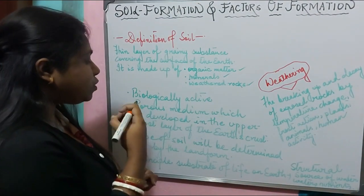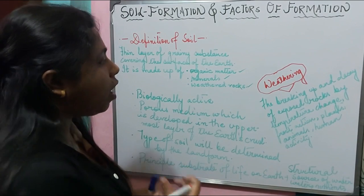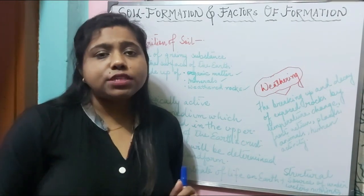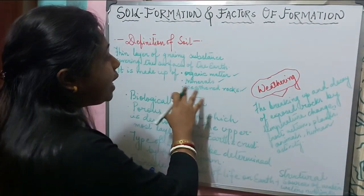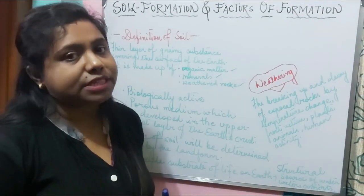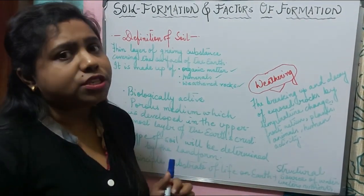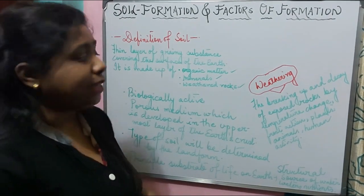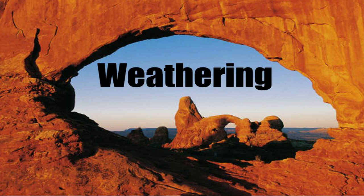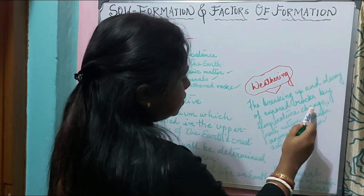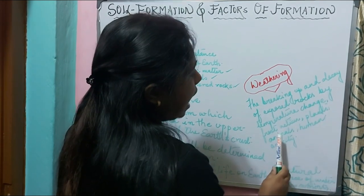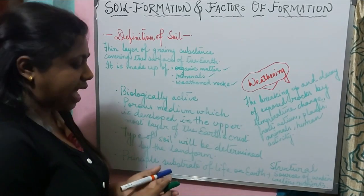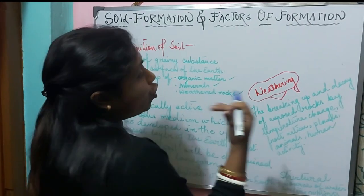We can utilize the plants for our own needs. Soil is referred to as a principal substrata of life on earth. When will a soil be fertile? When it has the right mixture of minerals and organic matter, then we can say the soil is fertile. Soil is formed by the process of weathering. What is weathering? The breaking up and decay of exposed rocks by temperature change, frost action, plants, animals, and human activity is referred to as weathering.